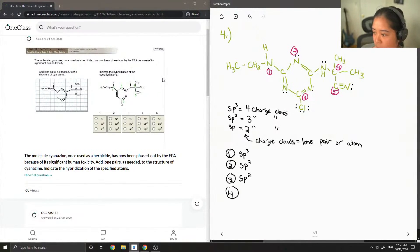For four, you have one, two, three, four atoms. This is SP3.